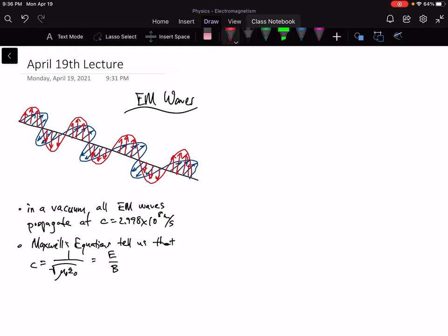So for instance, in a vacuum we know that all electromagnetic waves, so EM waves, propagate at C equals 2.998 times 10 to the 8th meters per second, right there.